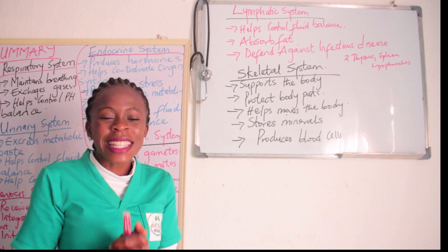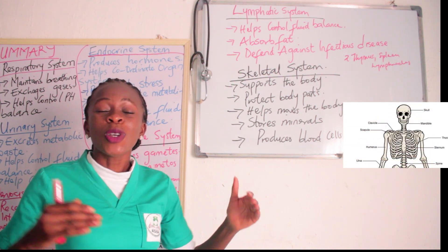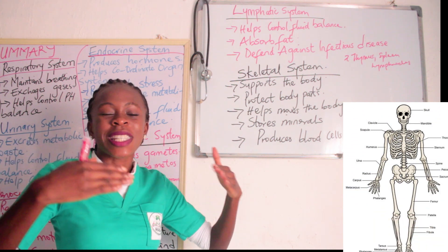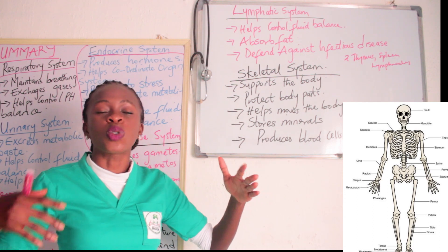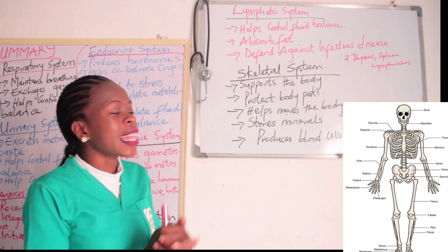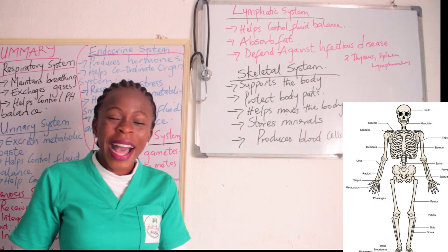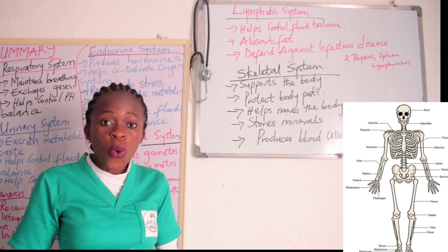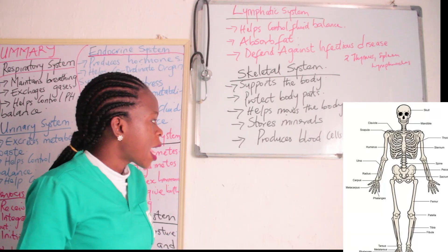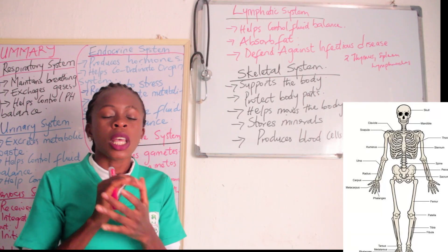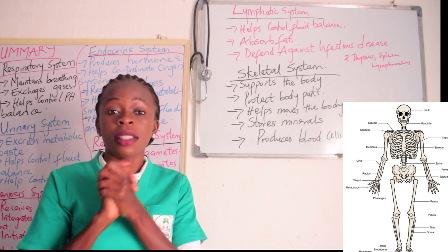The last system is the skeletal system. Most people combine it with the muscular system as the musculoskeletal system, but the skeletal system specifically has to do with the bones. The skeletal system supports the body, protects body parts, helps to move the body, stores minerals, and also produces blood cells.